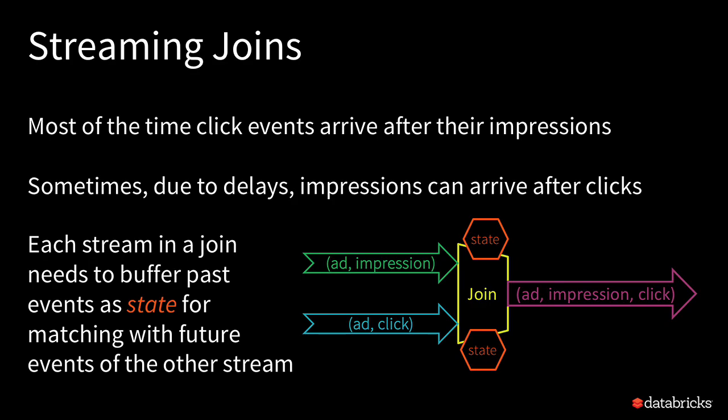Expressing this computation may seem simple, but complexity lies in the fact that data can be delayed. Your click will actually be generated after the impression has been shown, so at the data source there is a certain ordering. But when the data is actually received by the engine, it may come totally out of order — the click data may arrive much before the impression data, because of random delays, like your browser not uploading the impression data because you closed your laptop. That's what complicates stream stream joins.